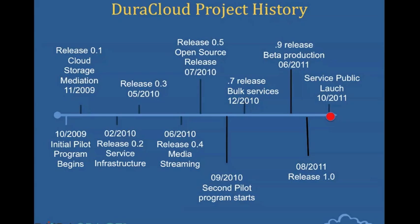Over the course of two years, there were 11 releases of the open source software. We are currently at the 1.1 release, and the public launch of the service is November 1st. We had two pilot programs during the course of the two years. The first pilot program was with New York Public Library, the Biodiversity Heritage Library, and WGBH to look at large-scale content transfer and content management in the cloud.